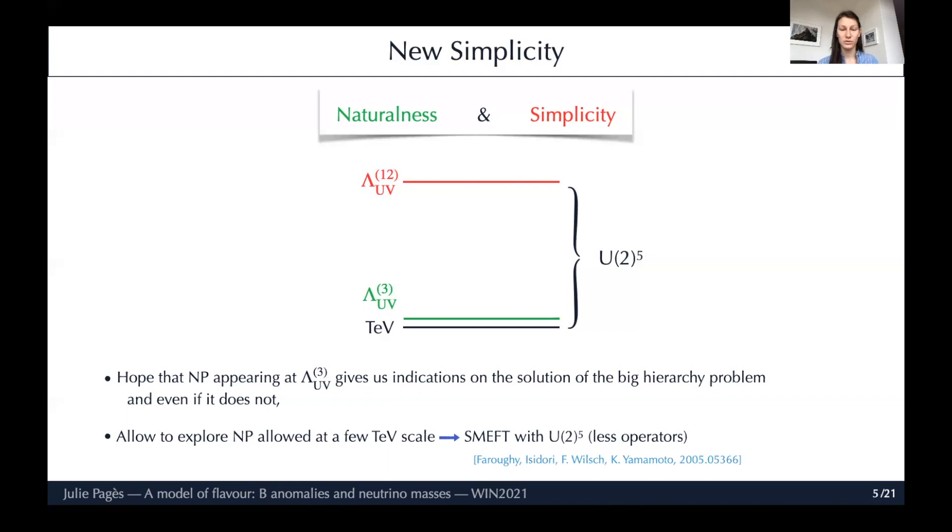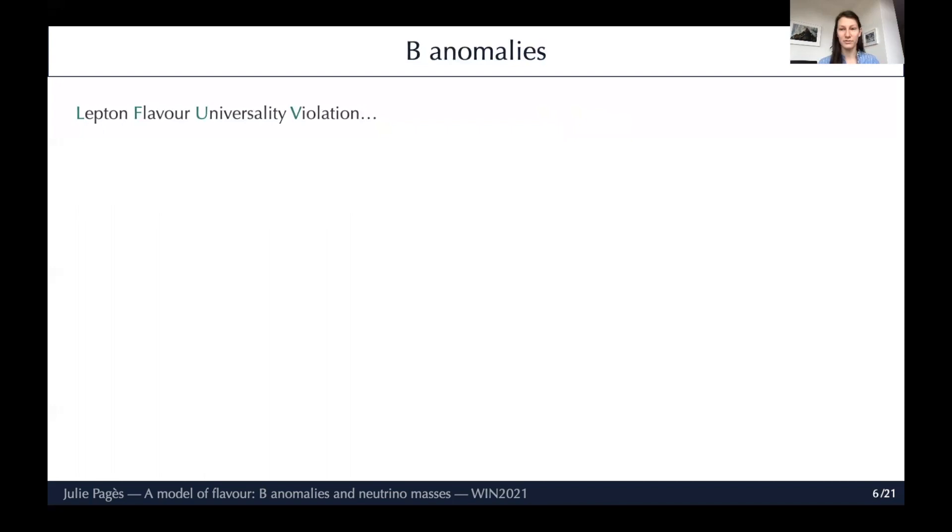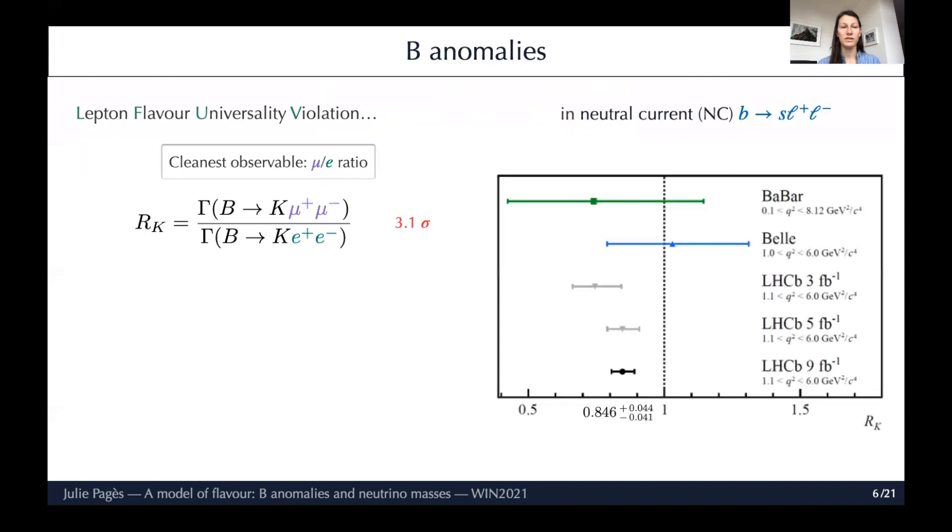At this point I want to advertise this work by my colleagues where they classified the SMEFT operators according to the U(2)^5 flavour symmetry, which helps reduce the number of relevant operators you need to consider. Now, is there reason to believe that there is new physics just around the corner at the TeV scale? Actually there is, because we've seen some lepton flavour universality violation in B decays in two types of decay. First in neutral current B→sℓℓ. For this, the cleanest and strongest leading observable is R_K, which was just updated at the winter conferences this year. It's the ratio of B→Kμμ over B→Kee, and the new update sets the deviation of this observable from the standard model prediction at 3.1 sigma.